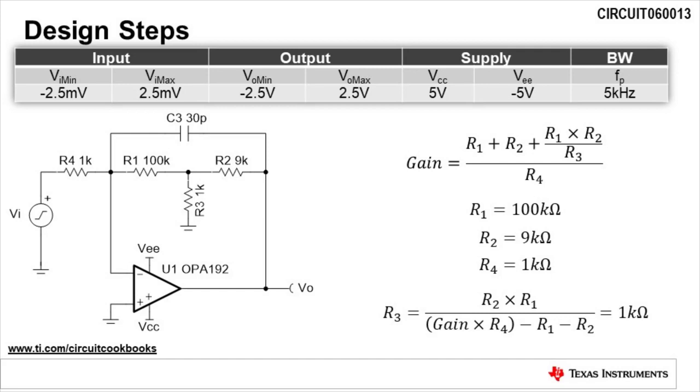The next step is to calculate resistors R1, R2, R3, and R4 to set the gain calculated in the previous slide. For this design, we will select resistor R1 as 100 kilo ohms, R2 as 9 kilo ohms, and R4 to be 1 kilo ohm.